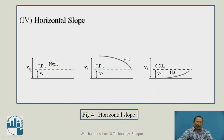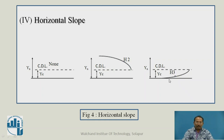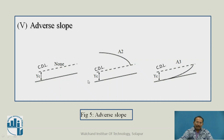For horizontal slope, Yn does not exist, so H1 does not exist. When Y is in zone 2, Y > Yc, giving H2 profile. When Y is in zone 3, Yc > Y, giving H3 profile. Similarly for adverse slope, Yn does not exist, so A1 does not exist. When Y > Yc it is A2, and when Yc > Y it is A3 type profile.